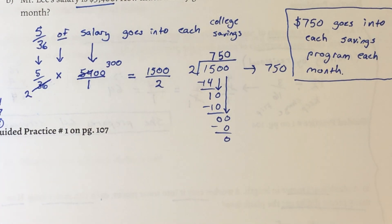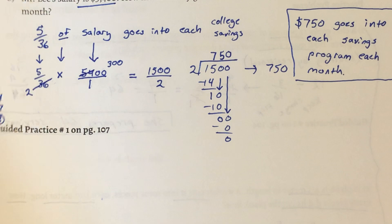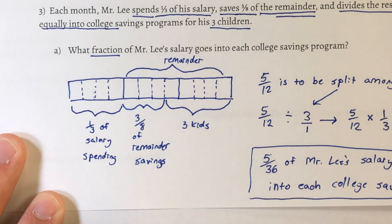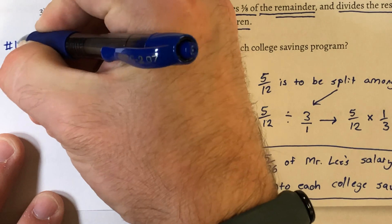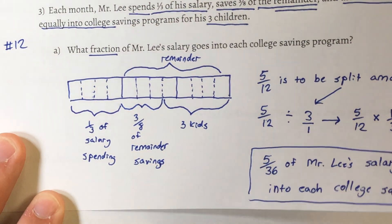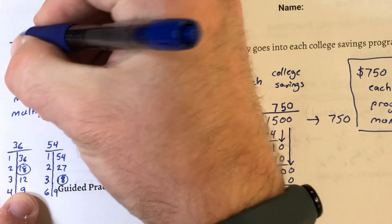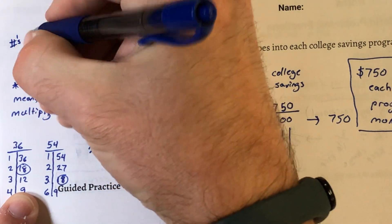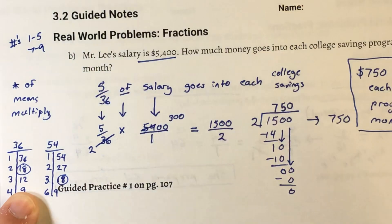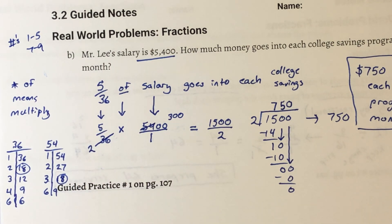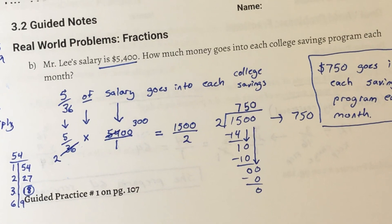If you're using the Math in Focus textbook for sixth grade, Part A most helps with number 12 on the assignment, and Part B most helps with numbers 1 through 5 and 7 through 9, which involve a lot of dividing and multiplying fractions.